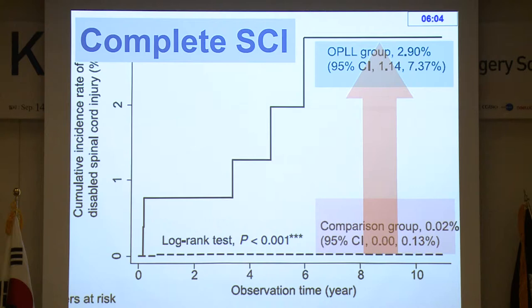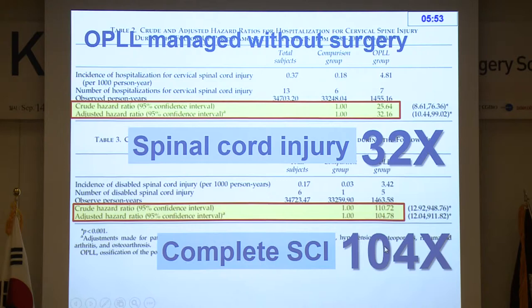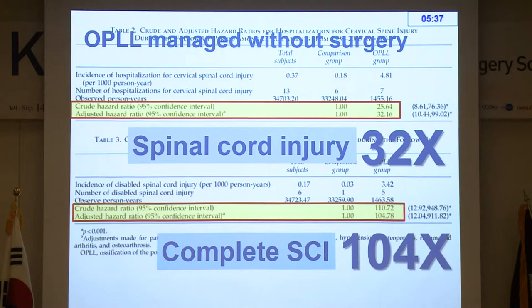For complete spinal cord injury, the risk is even higher. When you see a patient in your clinic with OPLL, even if symptoms are minor, we have evidence that these patients should be treated if there are symptoms, because the subsequent spinal cord injury risk would be 100 times higher than those who had no OPLL.